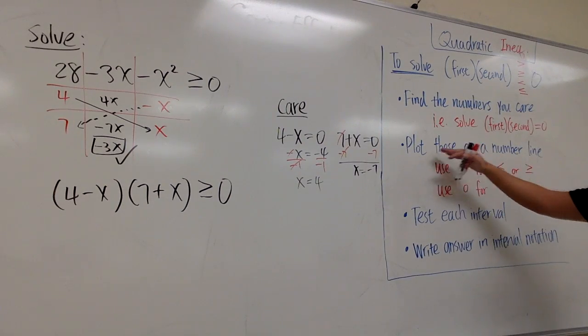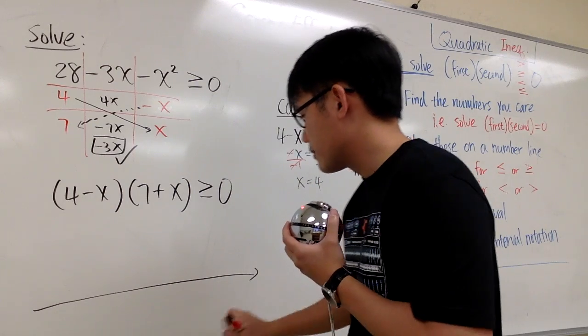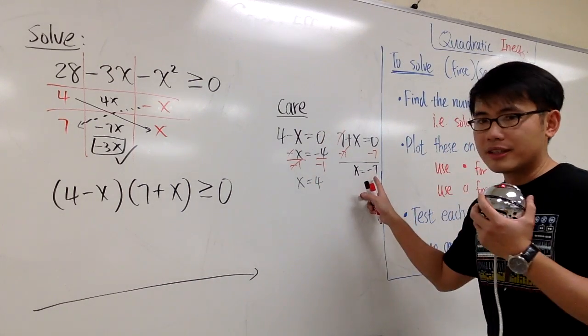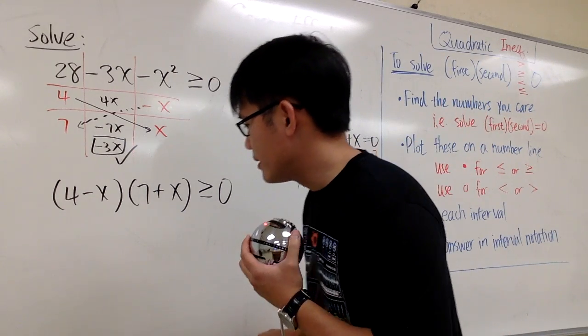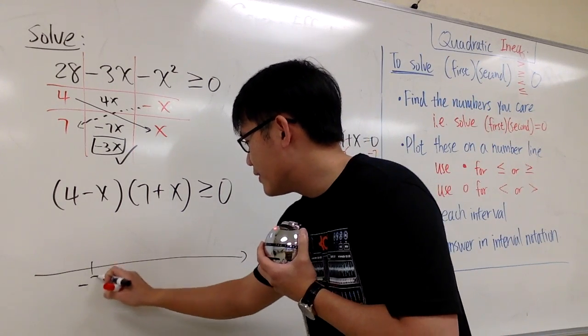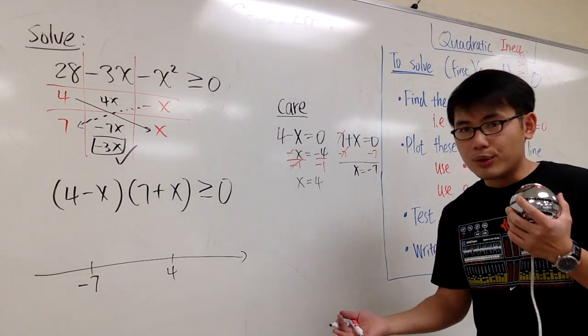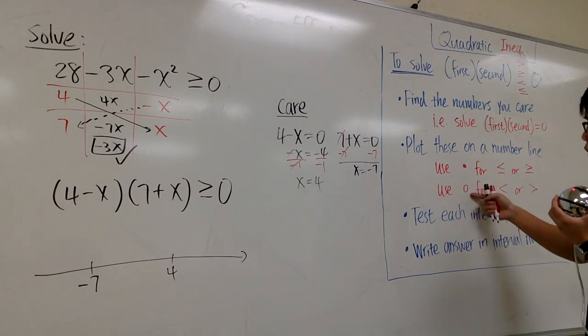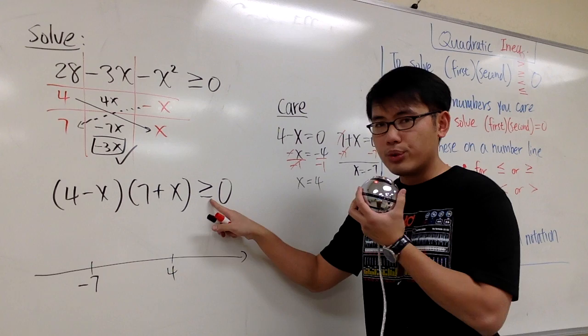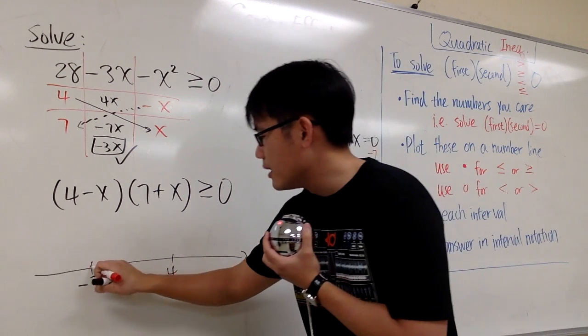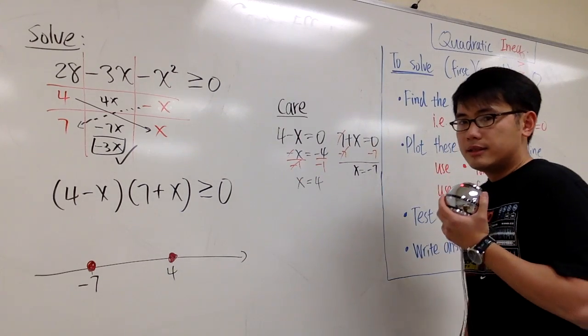And then, we plug these numbers on the number line. We have to make sure to put down a smaller number on the left. So here, we will put down negative 7 right here, and then 4. And what kind of circle are we going to use? Either close or open. It all depends on the symbol. Here, we have a greater than or equal to because of equal to. So I'm going to use close circle right here and close circle right here. So that's our setup.